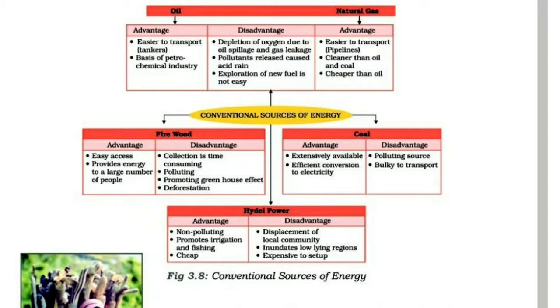The first fossil fuel is oil. The advantages of oil are that it is easier to transport and it forms the basis of the petrochemical industry.